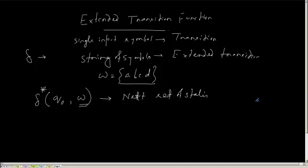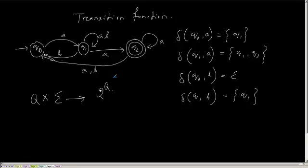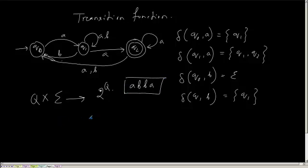Suppose I have been given a string A, B, B, A and I have to write the extended transition function for this. How will I do that? It is written as delta star. I am currently in Q0, starting state Q0, and my input string will be A, B, B, A.